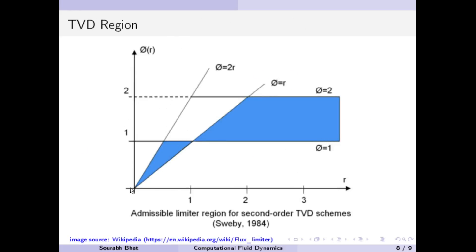There is one more important point: when r is equal to 0 or negative, it means there is an extremum — on one side of this point the value is dropping, and on the other side it is also dropping. It is like a hill or a valley when r is negative.